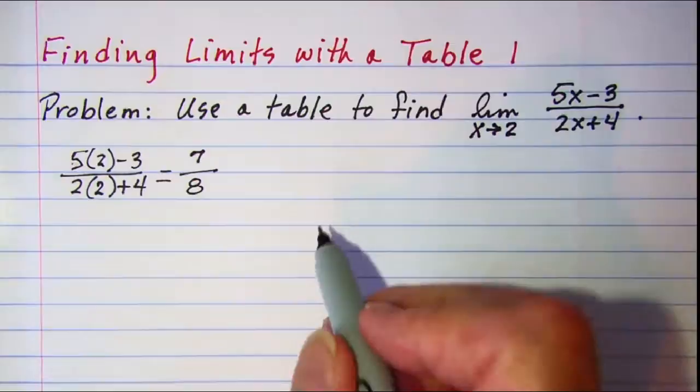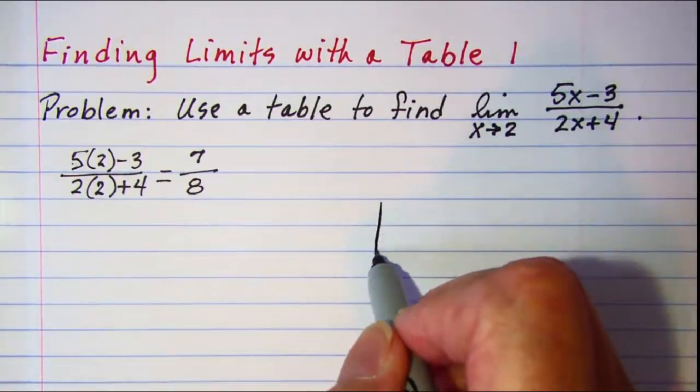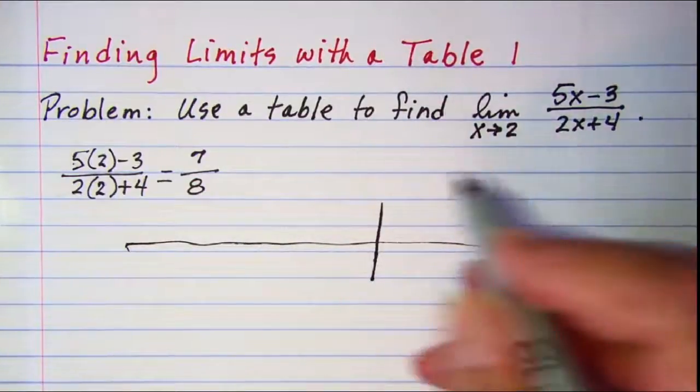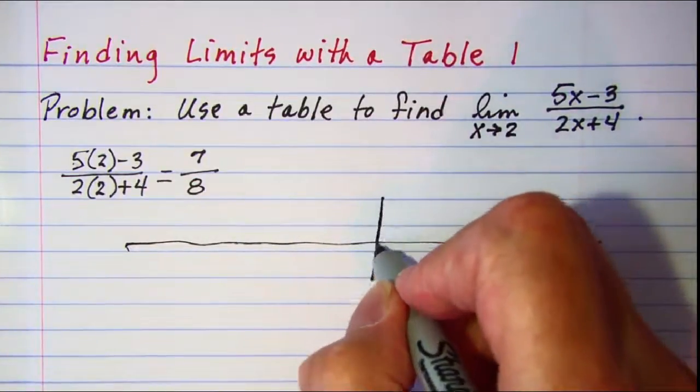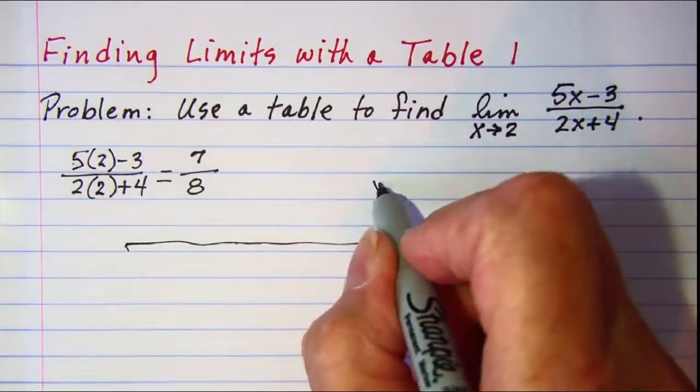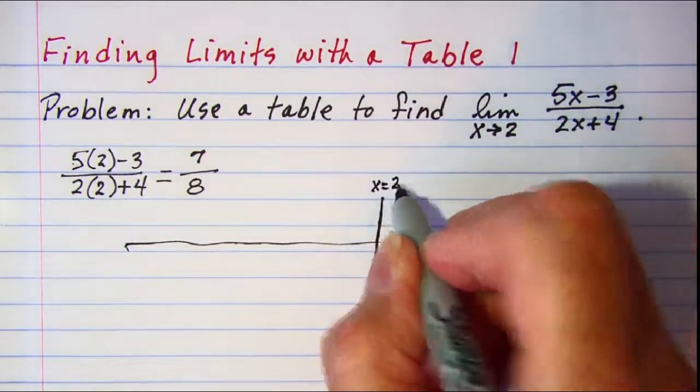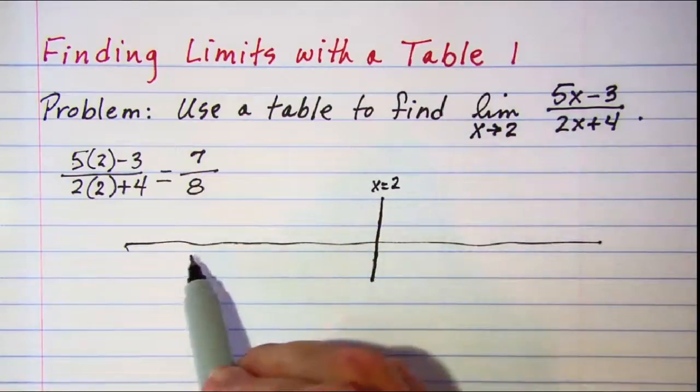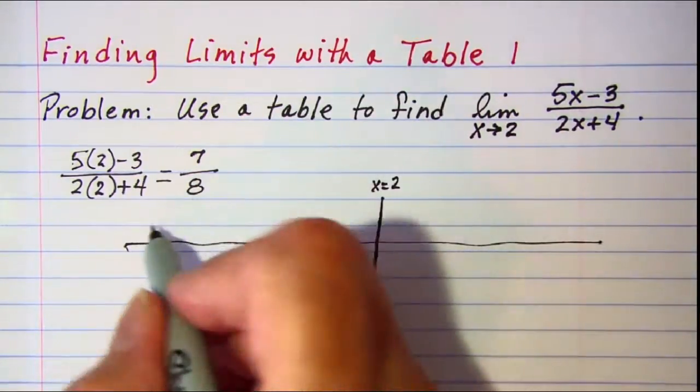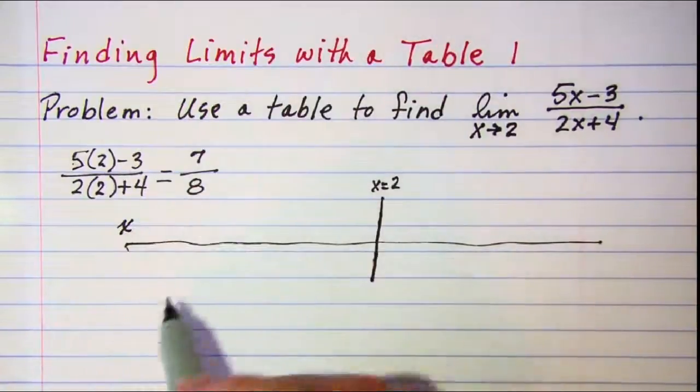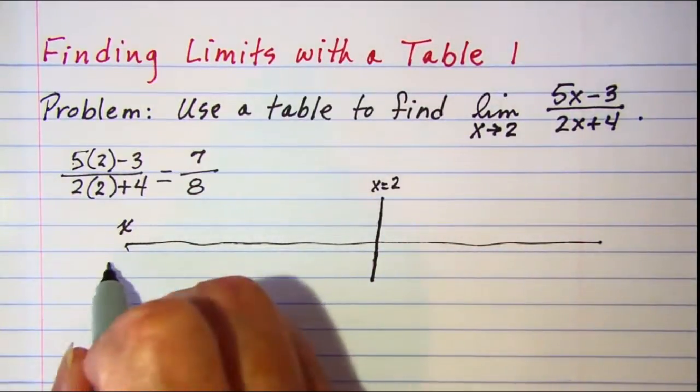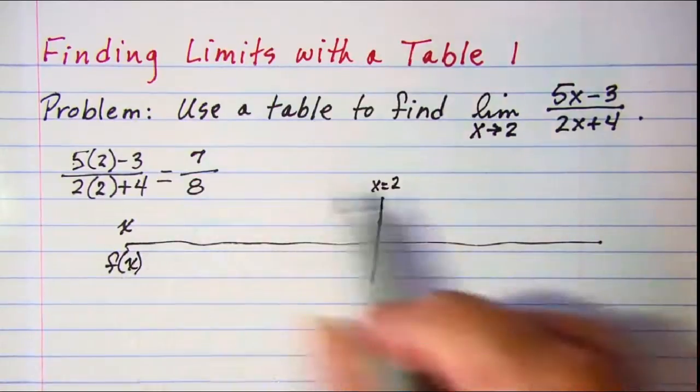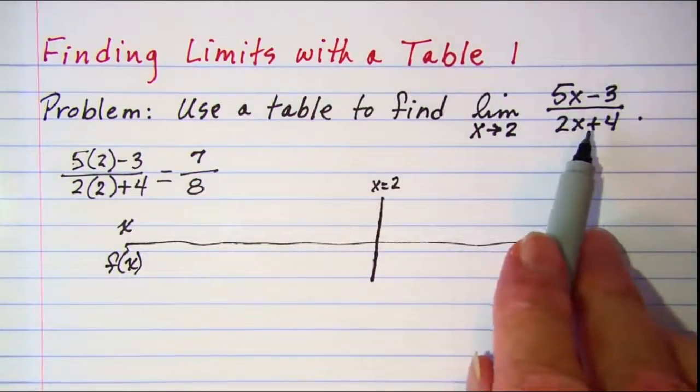Now for a table what we're going to do, I'll just make it a horizontal table and this line is going to be x equals 2. And what we want to do is pick numbers that are smaller than 2 and numbers that are bigger than 2 and use those for my values of x and then calculate values of f which would be the whole fraction.